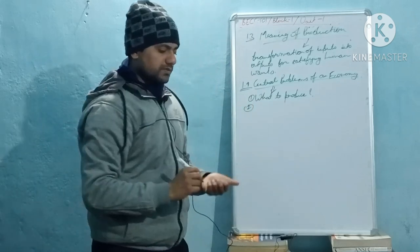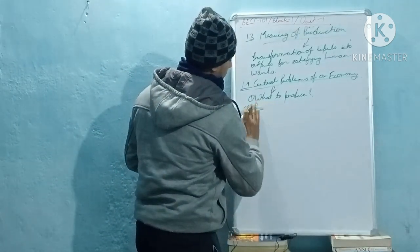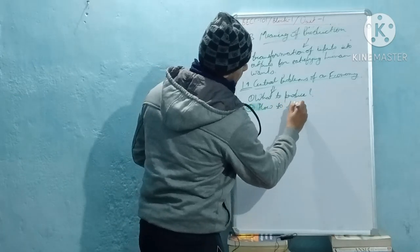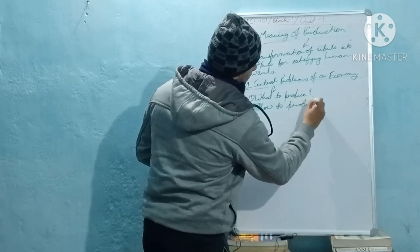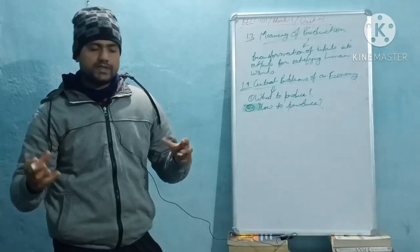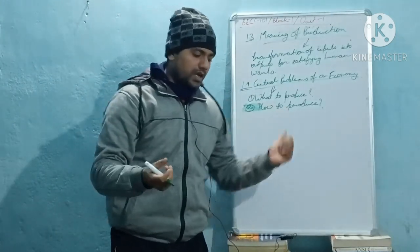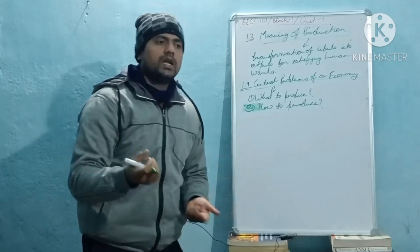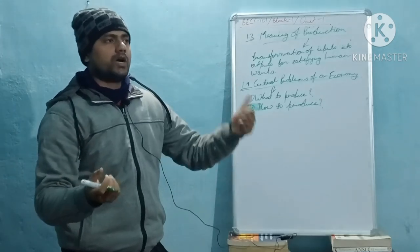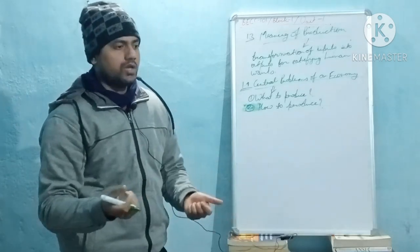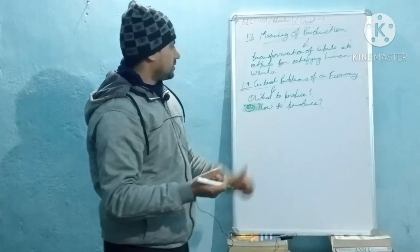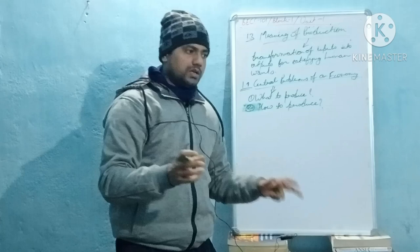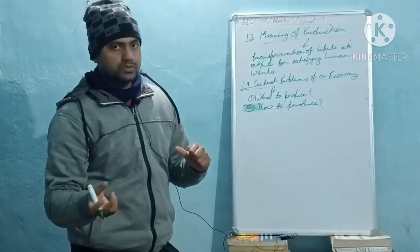The second central problem is 'how to produce.' This means what different techniques or technologies we should use, what kinds of inputs we should use, and how much capital we should use to produce output. It covers what combination of labor and capital we are going to use to produce products.